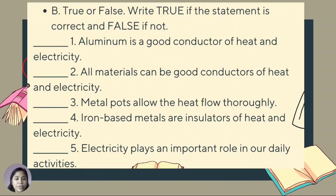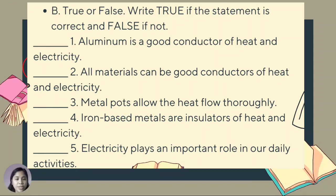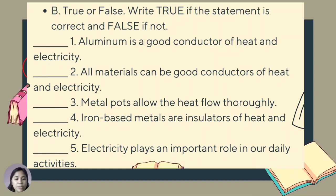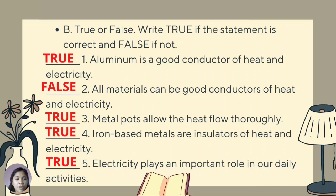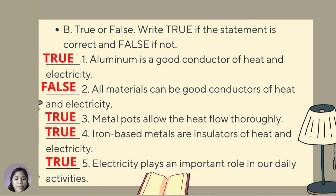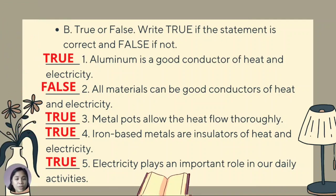True or false — write true if the statement is correct and false if not. Number 1: aluminum is a good conductor of heat and electricity. Number 2: all materials can be good conductors of heat and electricity. Number 3: metal pots allow heat flow thoroughly. Number 4: iron-based metals are insulators of heat and electricity. Number 5: electricity plays an important role in our daily activities. Correct answers: 1 — true, 2 — false, 3 — true, 4 — true. That ends our lesson for week 2, Science 5, Quarter 3. Thanks for listening. Happy learning!